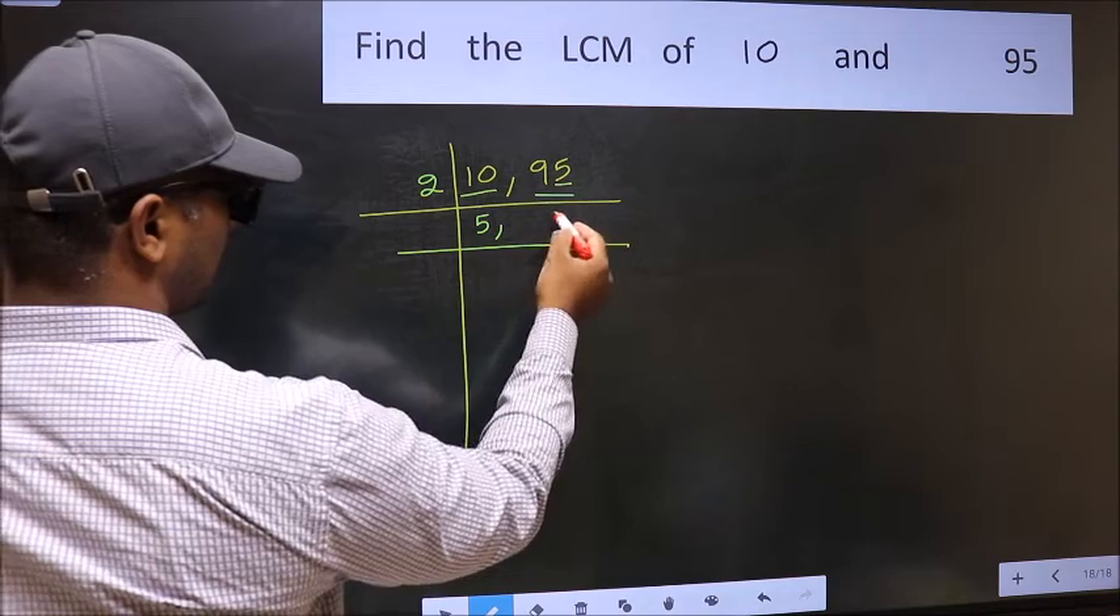Now you should focus on the first number, which is 10 here. 10 is 2 times 5 is 10. The other number 95. Last digit 5, not even. So this is not divisible by 2. So you write it down as it is.